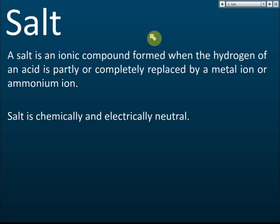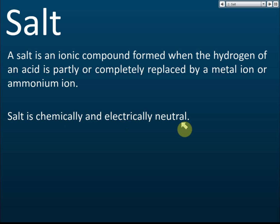A salt is an ionic compound — not a covalent compound. Being ionic means it contains positive and negative ions. Salt is an ionic compound formed when the hydrogens of an acid are partly or completely replaced by metal ions or ammonium ions. The metal typically comes from an alkali. Salt is chemically and electrically neutral — even though the negative ion comes from an acid and the positive ion comes from an alkali, salt is neither acidic nor alkaline.